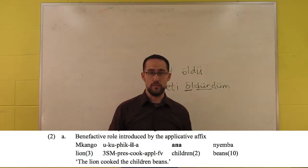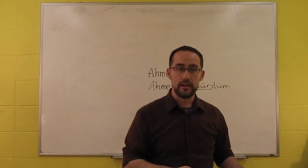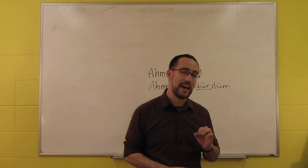It adds an oblique argument. The causative adds an extra agent, the applicative adds an oblique. So that's another example of valence adding morphology.